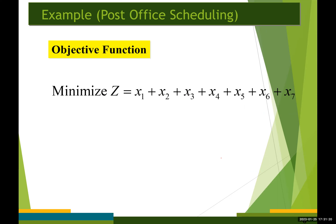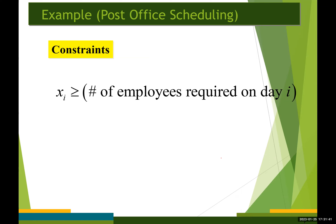The objective is to minimize the total number of full-time employees that must be hired. This leads to the following objective function. To ensure that the post office has enough full-time employees working on each day of the week, you may add constraints for each day. For example, for Monday, the constraint is x1 ≥ 17, because at least 17 employees are required on Monday.